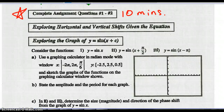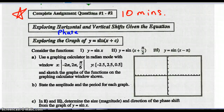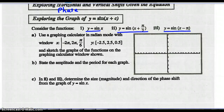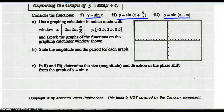Exploring horizontal and vertical shifts given the equation. We looked at graphs to figure out vertical and horizontal shifts — remember, horizontal shifts can also be called phase shifts. Now let's look at the equation: y equals sine(x + c). Consider the functions sine x, sine(x + π/2), and sine(x − π). Use your graphing calculator in radian mode and graph them.